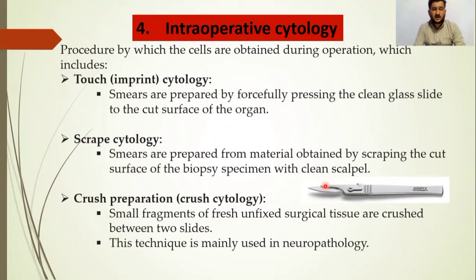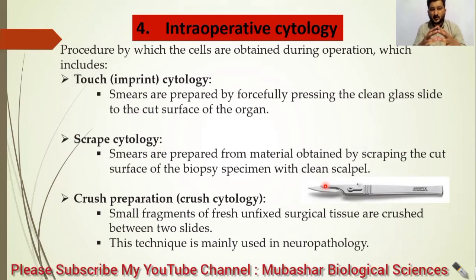All these types are also called interventional cytology. Touch cytology smears are prepared by firmly pressing a clean glass slide to the cut surface of the organ. In scrap cytology, smears are prepared from material obtained by scraping the cut surface of the biopsy specimen with a clean scalpel. In crush cytology, small fragments of fresh unfixed surgical tissue are crushed between two slides.